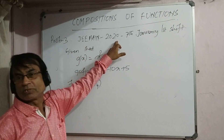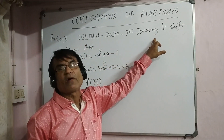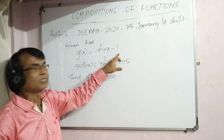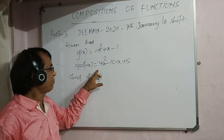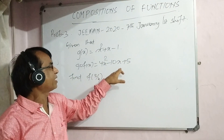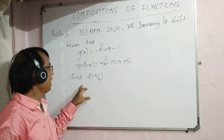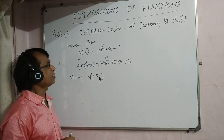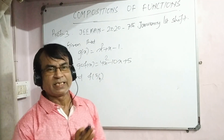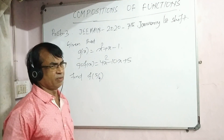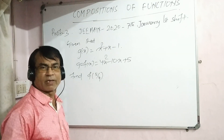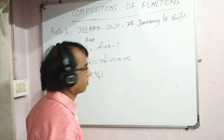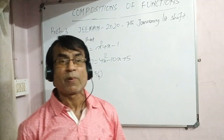Now a problem from JEE 2020, 7th January first shift. Here g(x) = x² + x − 1 and g(f(x)) = 4x² − 10x + 5. We need to find f(5/4). Now, how are we solving this problem within a few seconds — watch carefully, some intelligence needs to be applied here.